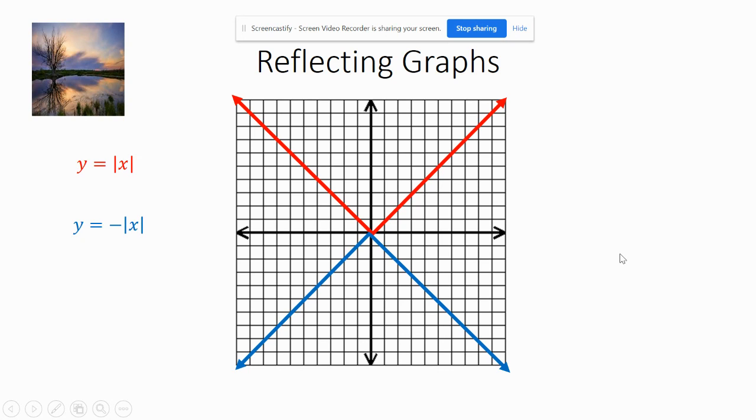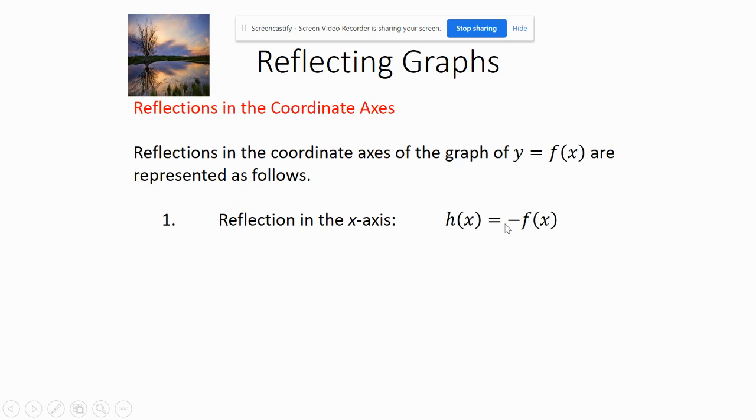So to reflect it across the x-axis, reflect it across x, all that has to happen is this. I put a negative in front of the entire equation. That is correct. That's all that it would take to reflect it across the x-axis.